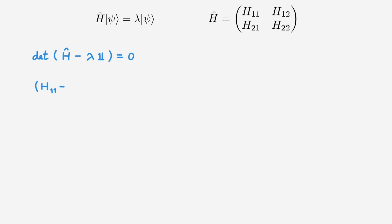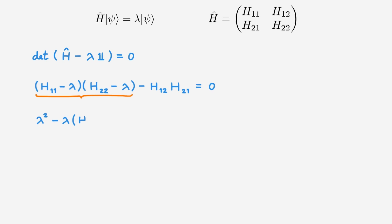Let's copy down the polynomial equation we need to solve to determine the eigenvalues. We can multiply out the first term to obtain lambda squared minus lambda times (h11 plus h22) plus h11 times h22. We then add the second term, which we simply copy, and set this all to zero.